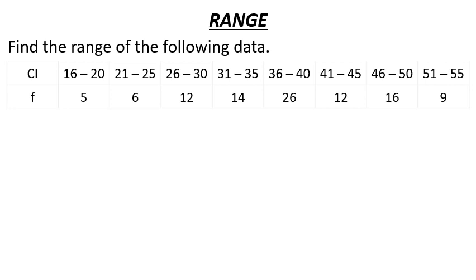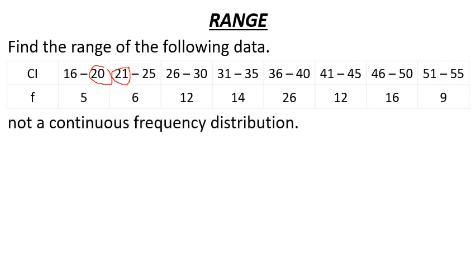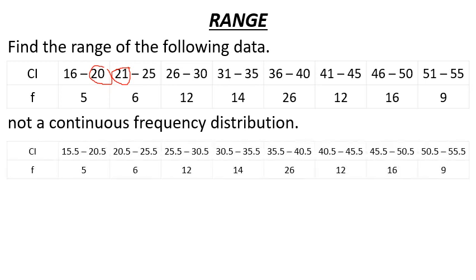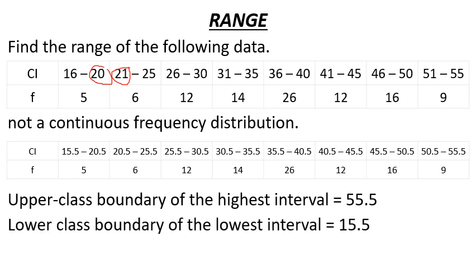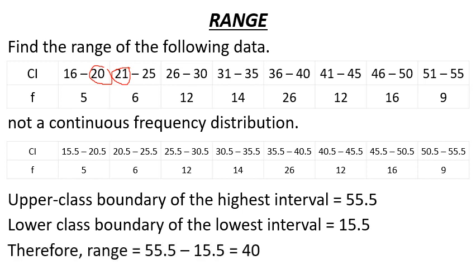Find the difference between the upper bound of a class and the lower bound of the next class. If the difference is, say, 29 to 20 points, this is an exclusive class interval. The upper class boundary of the highest class interval is 25 and the lower class boundary of the lowest interval is 15, giving a range of 50.